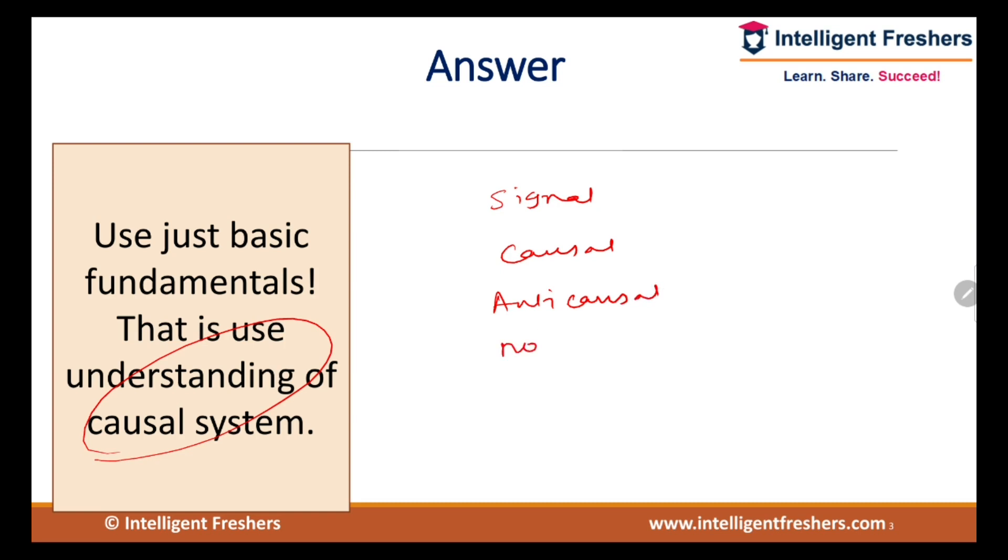Causal signal means at all time instances which are t less than zero, the signal value is zero. So basically, as far as causal system is concerned, causal signal have zero value for all time instances t less than zero.